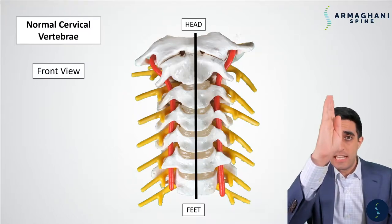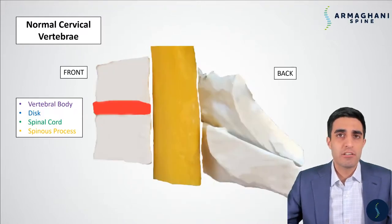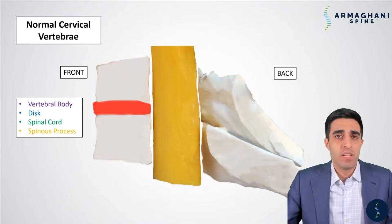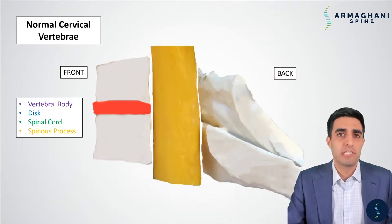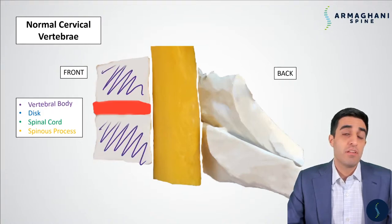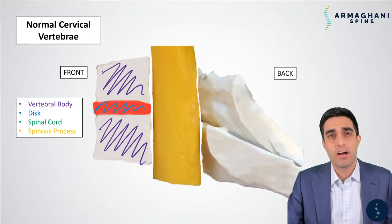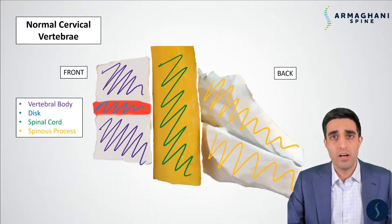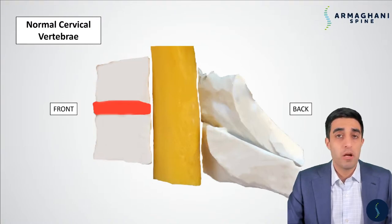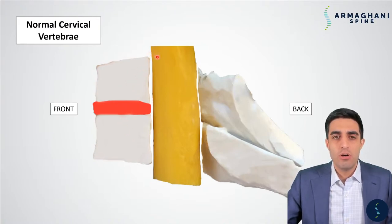Now imagine we make a cut right down the middle of that front view. Over here towards the left side of the screen is the front of your neck — your throat and esophagus are in this area — and the back of your neck is here on the right. The vertebral bodies are highlighted in purple, with a disc in between each vertebrae highlighted in blue. The spinal cord is in green and the spinous processes are highlighted in yellow. This is what normal cervical vertebrae look like without any degeneration.